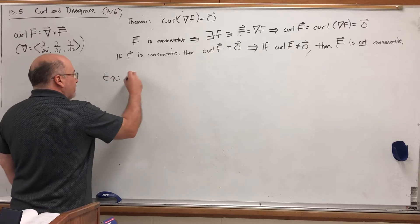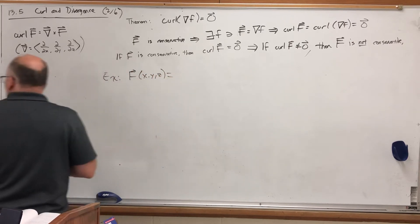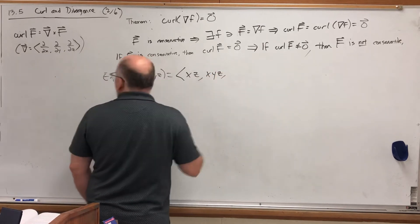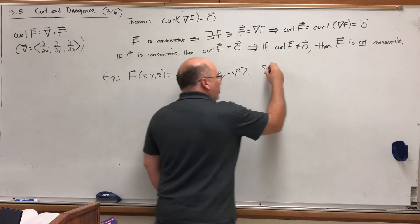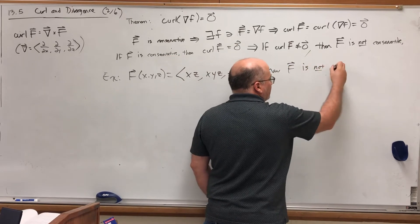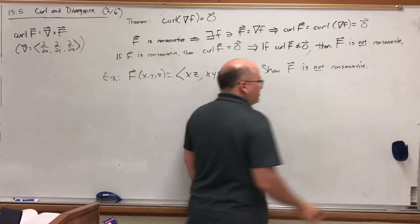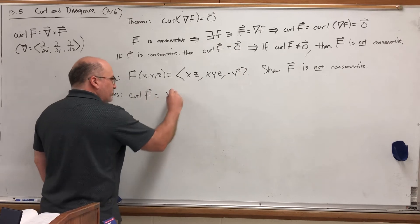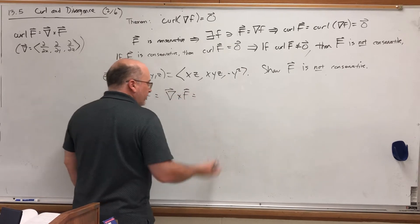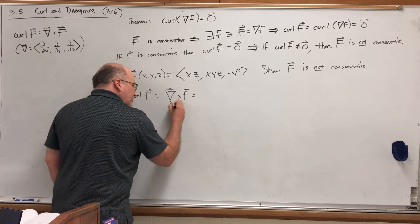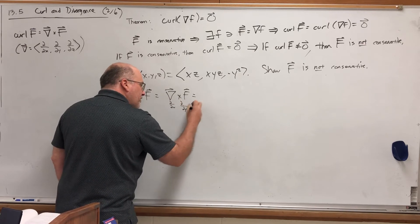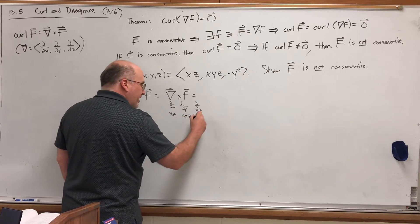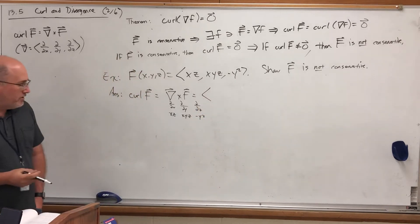For example, let's take the vector field F which takes the point (x, y, z) and assigns to it the vector whose first component is xz, whose second component is xyz, and whose third component is negative y squared. Our goal is to show that vector field F is not conservative. Using this theorem, all we have to do is show that its curl is not identically zero. We start by taking the curl of F, which we can think of as the del operator vector crossed with F. Our del operator is (∂/∂x, ∂/∂y, ∂/∂z) and our F components are xz, xyz, and −y².